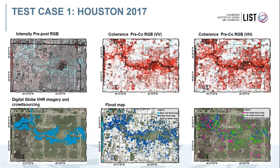Here is an example showing the crowdsourcing points detecting water within buildings alongside the flood map obtained with our algorithm — they look quite similar. This also shows what we gain by combining the VV and VH polarizations: in blue are areas where both polarizations detect flood, while in purple and green the decrease of coherence is detected with only one channel.